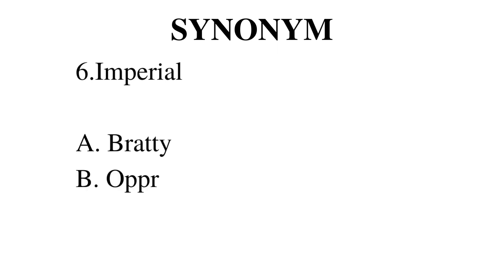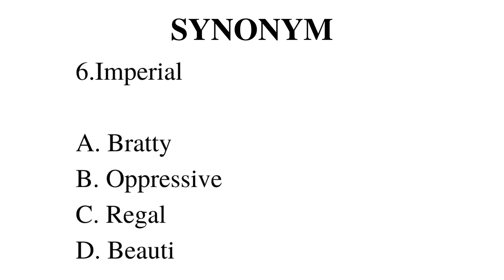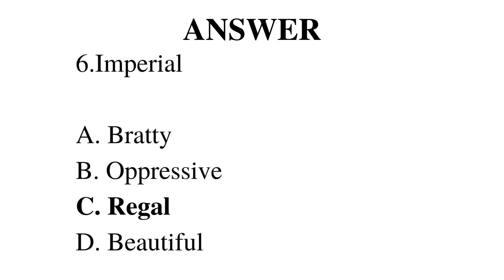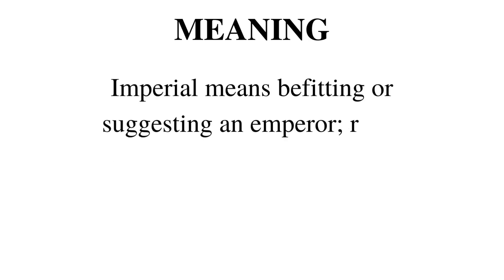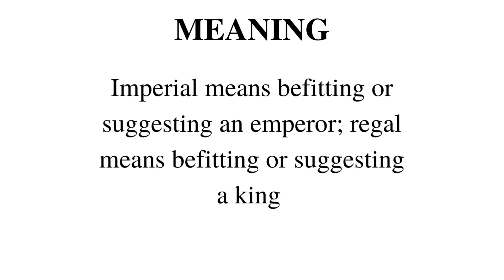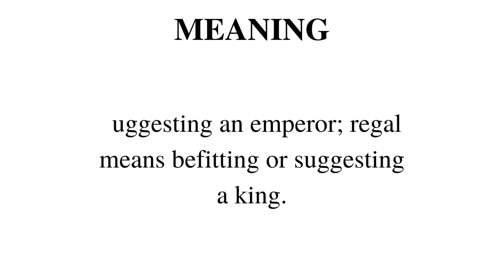Number 6. What do you mean by imperial? Is it A bratty, B oppressive, C regal or D beautiful? The correct answer is C regal. Imperial means befitting or suggesting an emperor. Regal means befitting or suggesting a king.